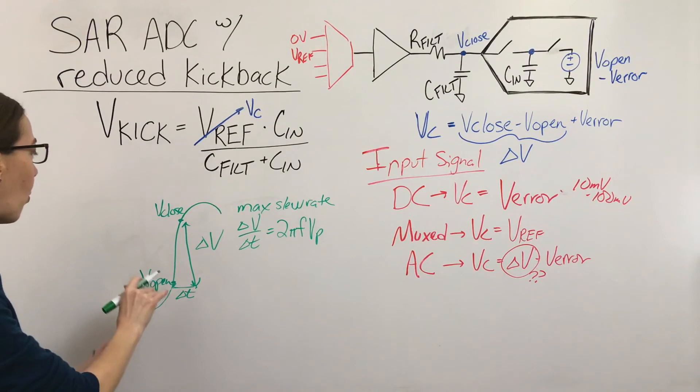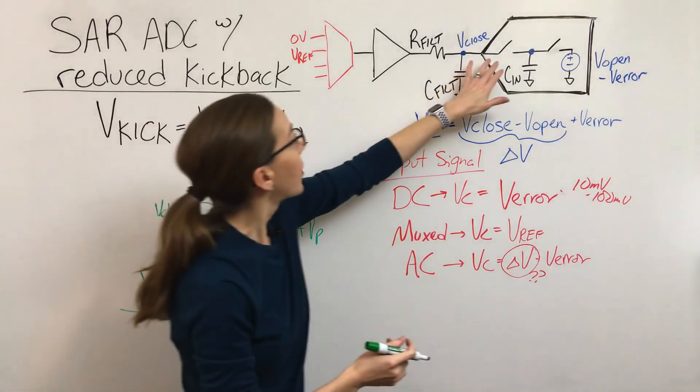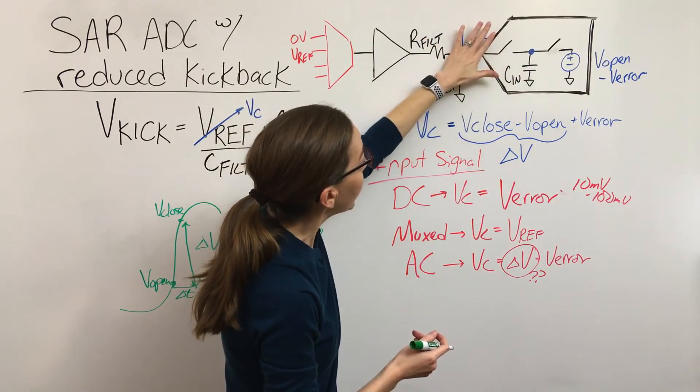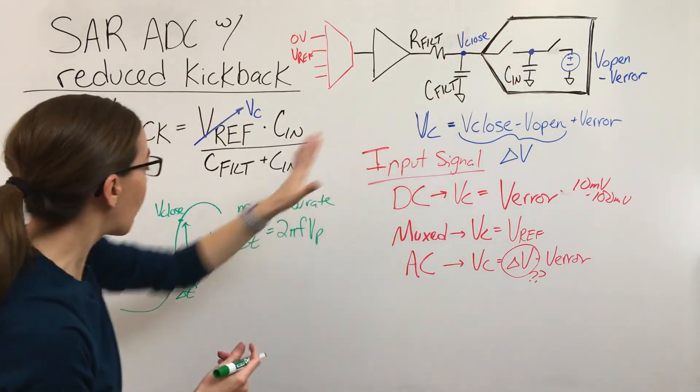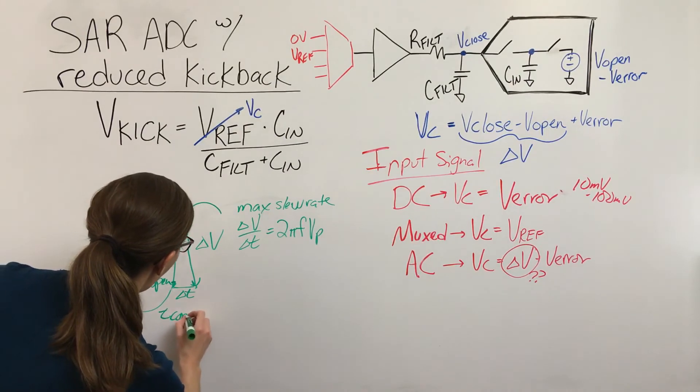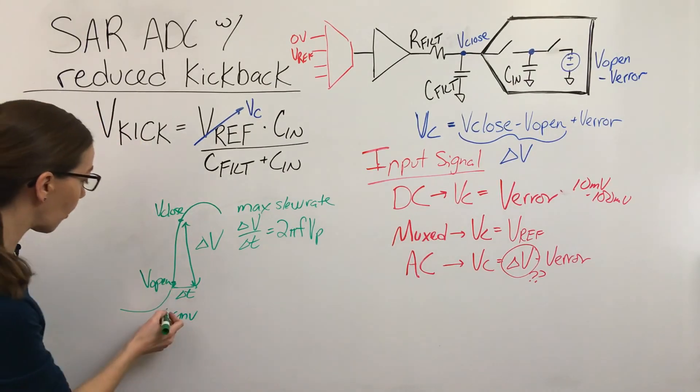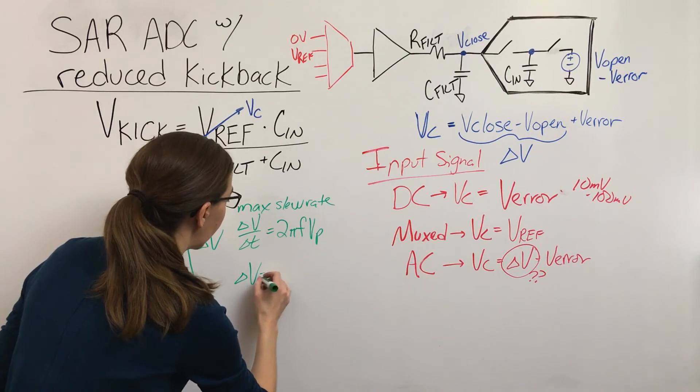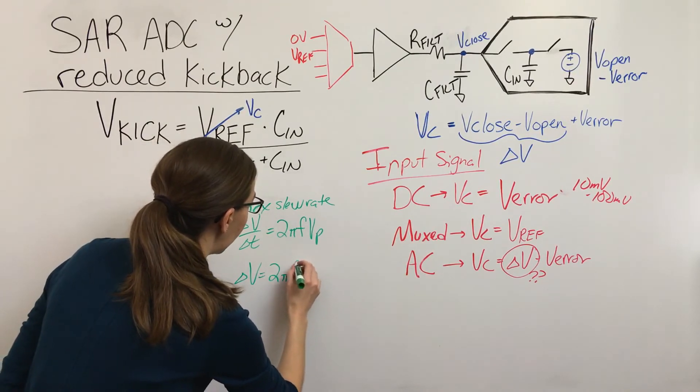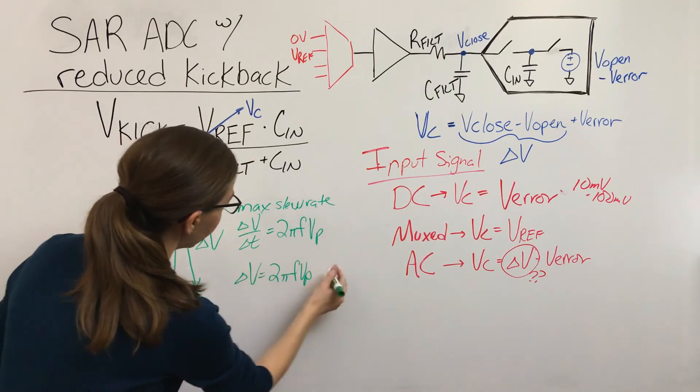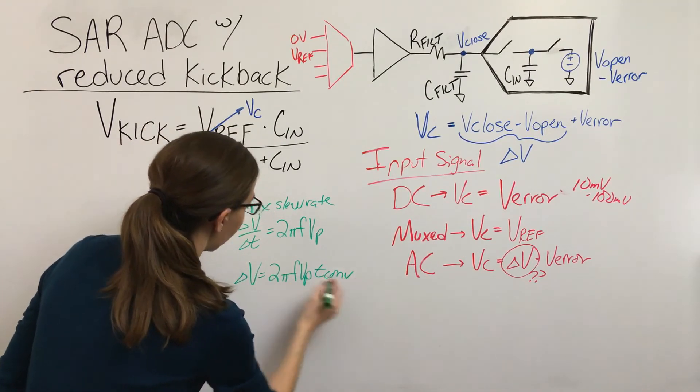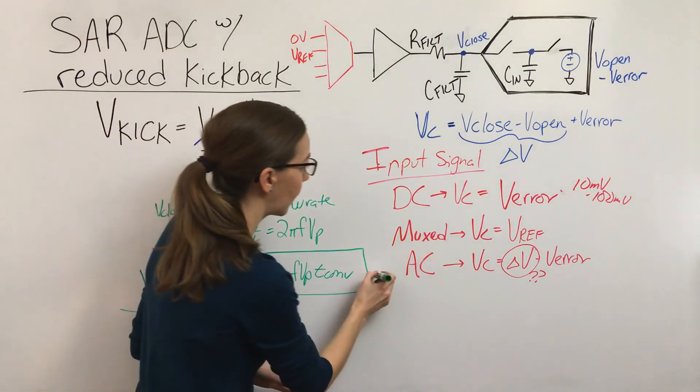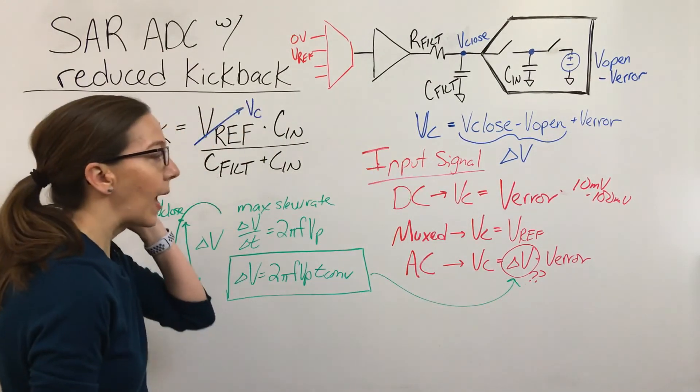And this delta T we know the value of that because it's the time between when this switch opens to when the switch closes. So the time that this switch is open is the conversion time of the ADC. So we know that value and we've discussed that in previous videos. So if you need to review, but this delta T is basically the conversion time of the ADC. So we can rearrange this so that the delta V and then the delta T. All right. So for our AC case, this is what we use for delta V and then we've got the V error.